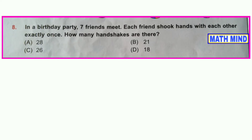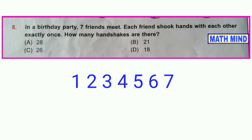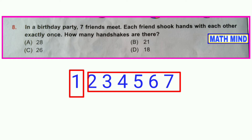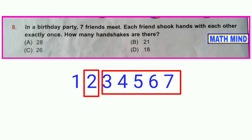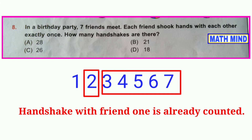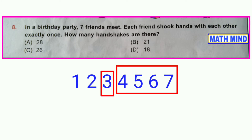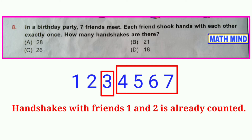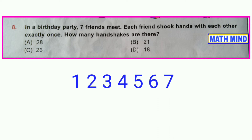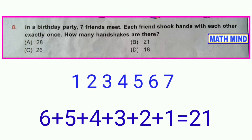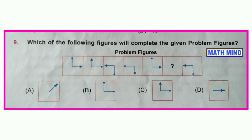Question number eight: In a birthday party, seven friends meet and each friend shook hands with each other exactly once. How many handshakes are there? Total friends: seven. Friend one will make handshakes with six friends, friend two with five friends, and so on — similarly three, two, plus one. Total handshakes: 6 + 5 + 4 + 3 + 2 + 1 = 21. Option B is correct.